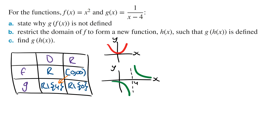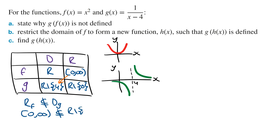We state that the range of the inner function f(x) is not a subset of the domain of the outer function g(x). We write this as: the range [0, ∞) is not a subset of the domain of all real numbers, not including 4. And so therefore, g∘f(x) is not defined.